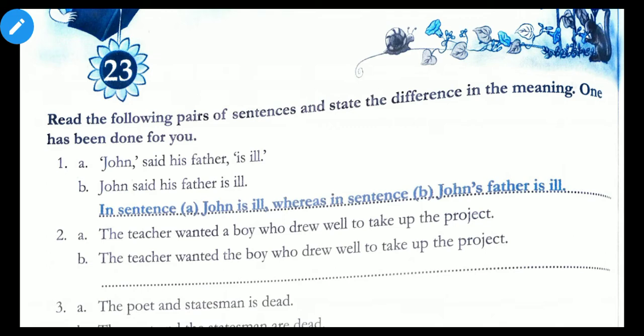In sentence A, John is ill, whereas in sentence B, John's father is ill. In sentence B, John says his father is ill — meaning John said that his father is sick. There is no difference between the words; the words are the same: John, said, his, father, is, ill. But the difference is just because of the placement of the punctuation mark. This is how you have to move on with the other sentences.